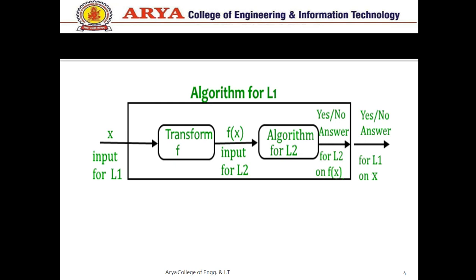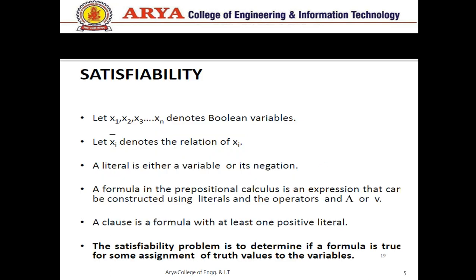We can show this diagrammatically. In this diagram, this is the complete algorithm for L1. First we take the input, apply algorithm L2, then it gives one answer — yes or no. On this answer value we again apply algorithm L1 and find the answer yes or no. That means if L2 has the yes answer then L1 also has the yes answer, because L1 reduces into L2 and L2 reduces back into L1. This is the concept of reducibility.